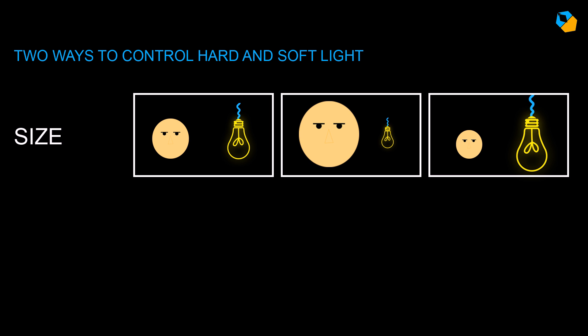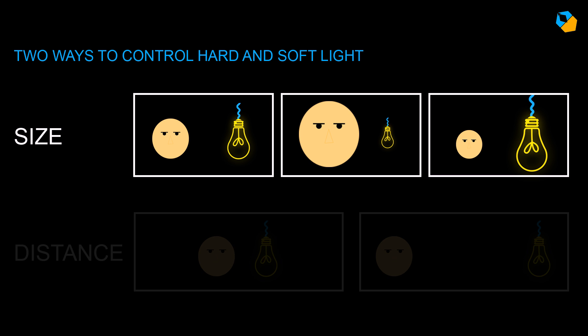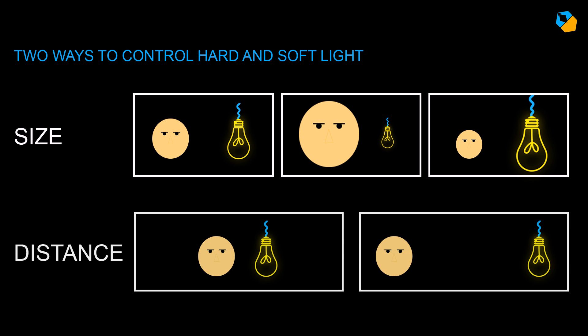Is there a special light that gives you hard light, and another that gives you soft light? No. In fact, any light can be hard or soft, depending on two things: one, the size of the subject, usually human beings, and the second is the distance between the light and the subject.